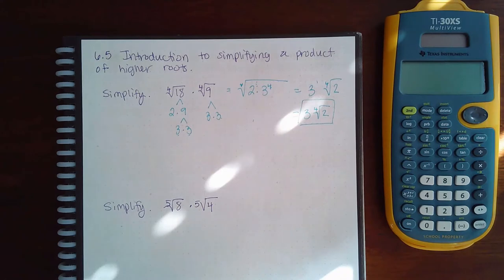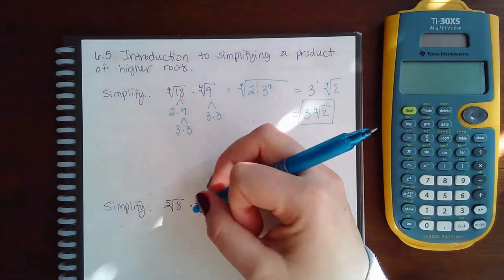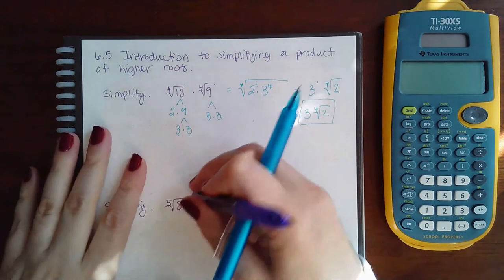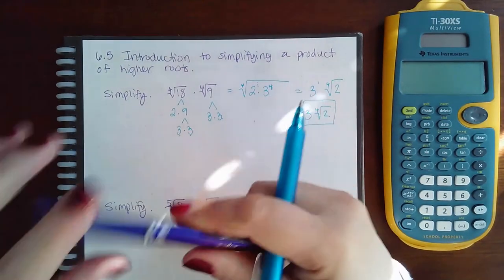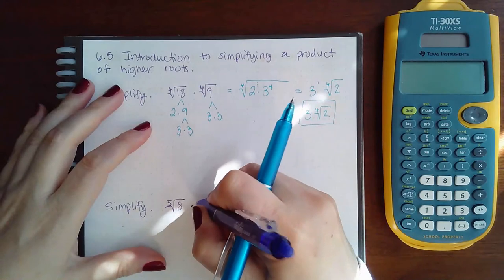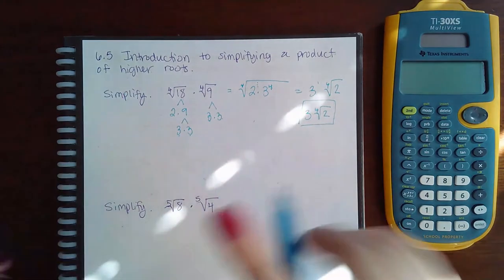Now 4th roots and 5th roots is another reason why it's very good to learn the process of what's happening, because you will not be able to do higher roots in your calculator and have it give you an answer like this - it'll just give you a decimal.